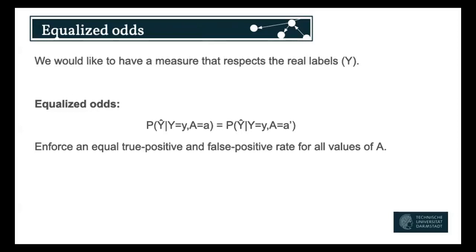So maybe we can't just look at our protected attributes — we also want to make sure we condition on the real labels. This enforces true positive and false positive rates to be equal for both distributions. This is known as equalized odds. There are a lot of other definitions, but this is fairly common. You could say, for example, we just don't want to be independent of A, but we also only want to admit students that are qualified — or maybe we want to randomly select students independent of their qualification.